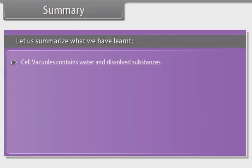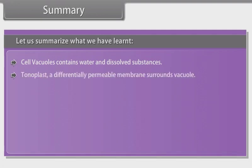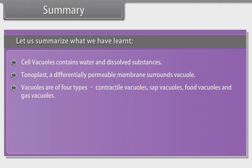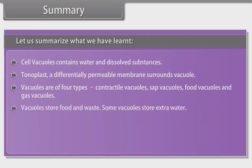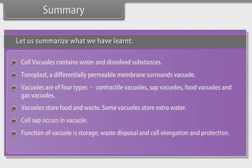Cell vacuoles contain water and dissolved substances. Tonoplast, a differentially permeable membrane, surrounds the vacuole. Vacuoles are of four types: contractile vacuoles, sap vacuoles, food vacuoles and gas vacuoles. Vacuoles store food and waste, and some vacuoles store extra water. Cell sap occurs in the vacuole. The functions of the vacuole include storage, waste disposal, cell elongation and protection.